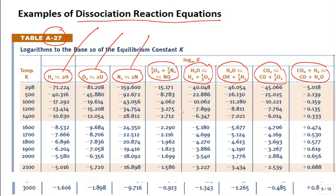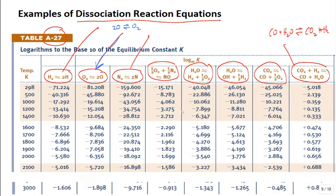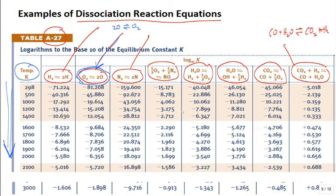Why didn't they write this equation as CO + H2O → CO2 + H2? Well, we're talking about dissociation reaction equations. These are reversible, so you could switch it around, but the table is written such that at higher temperatures you get more products. Temperature increases going down the table. For this oxygen dissociation equation, at very high temperature you get more O (monoatomic) — the reaction moves forward with increasing temperature. You can see this in the strong large negative numbers that trend toward zero.